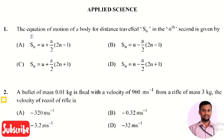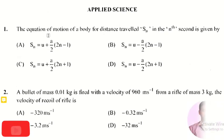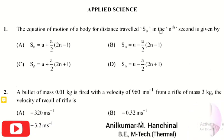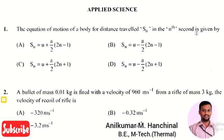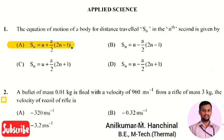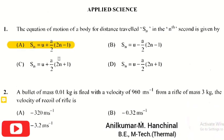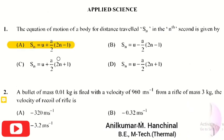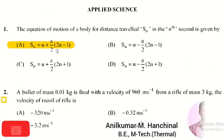The first question in the Applied Science section: the equation of motion of a body for distance traveled S_nth in the nth second is given by? The right answer is option A, that is S_n = u + (a/2)(2n − 1).